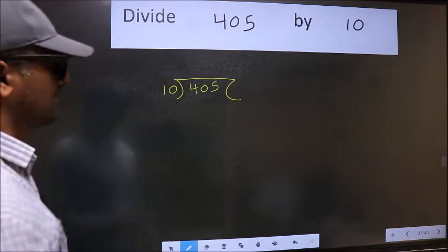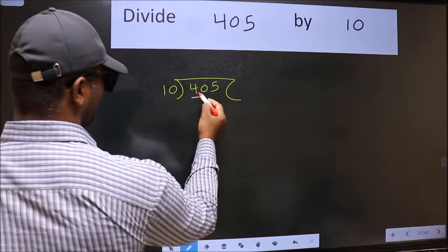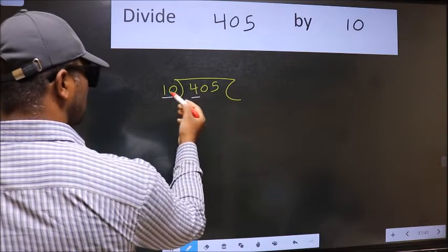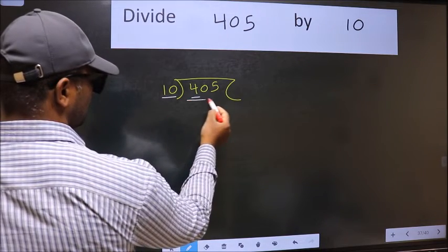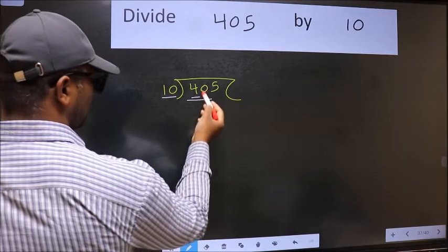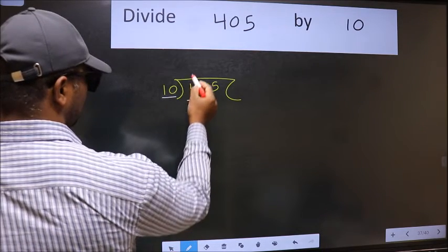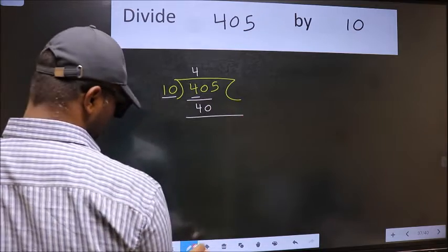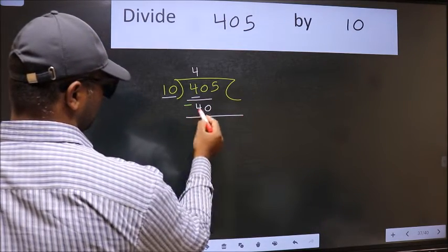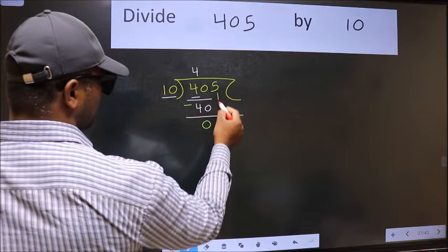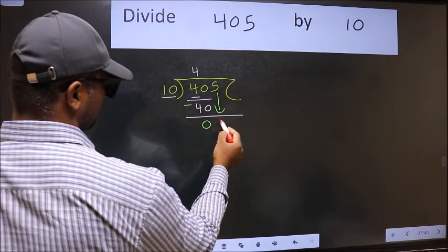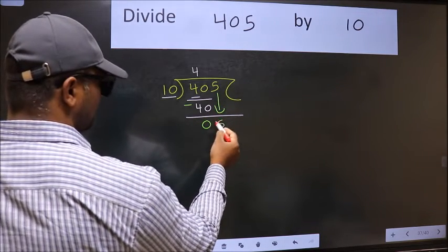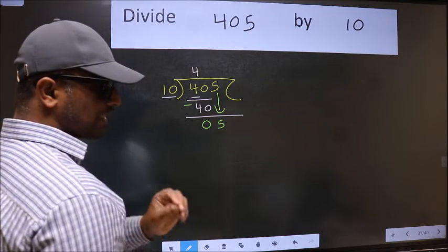Here we have 4 and here 10. 4 is smaller than 10, so we should take two numbers, 40. When do we get 40 in 10 table? 10 times 4 is 40. Now we should subtract. We get 0. After this, bring down the beside number, so 5 down. After this step, the mistake happens.